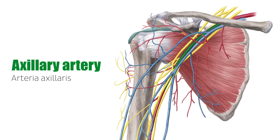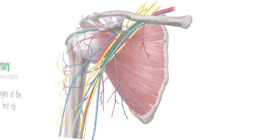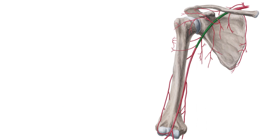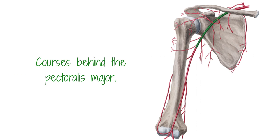The auxiliary artery is a direct continuation of the subclavian artery. It begins at the first rib. At the lower border of the teris major, it becomes the brachial artery. Called the auxiliary artery because of its location, it courses behind the pectoralis major and lies in conjunction with the auxiliary vein and the medial cord of the brachial plexus.